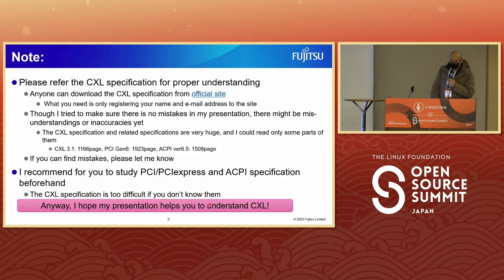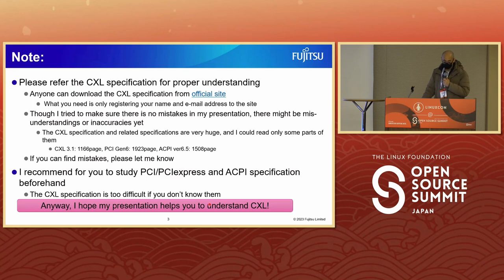Please note the following. Please refer to the CXL specification for proper understanding — anyone can download it from the official site by registering name and email. Though I tried to ensure there are no mistakes, there might be misunderstandings or inaccuracies. The CXL specification and related specifications are very large; CXL 3.1 is 1,166 pages. If you find mistakes, please let me know. I also recommend studying PCI Express and ACPI specifications beforehand, as CXL is too difficult without that background.